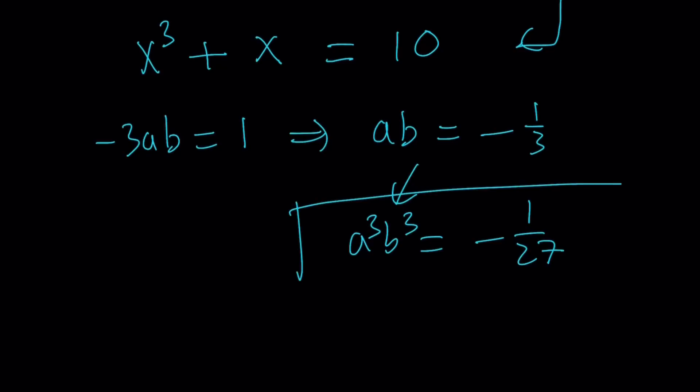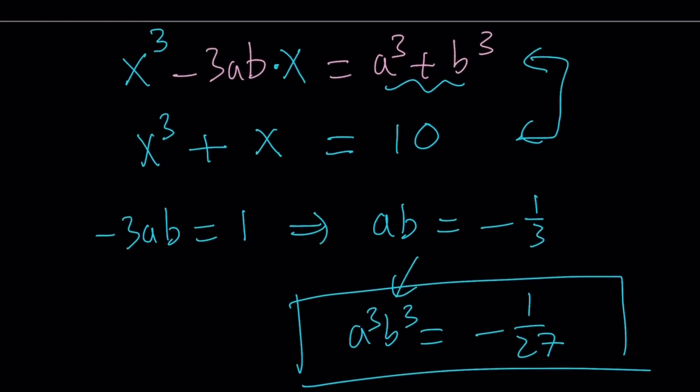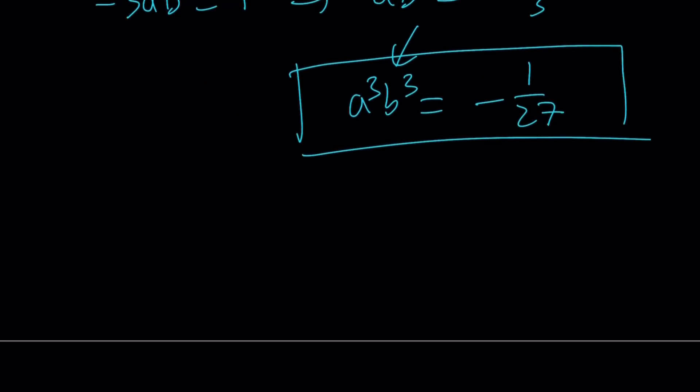If I go ahead and cube this, I get a³b³ = -1/27. So that's one of the equations that I need. And the other equation is going to come from here: a³ + b³ = 10.